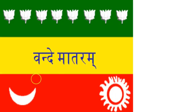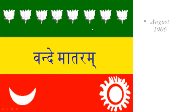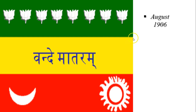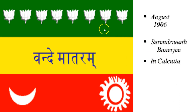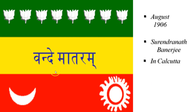Our first flag was accepted in August 1906. Surendranath Banerjee had the first place in Kolkata. The flag had colors — the color on the above, and in the middle, and there were 8 camels on the flag.